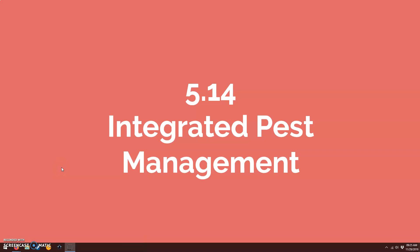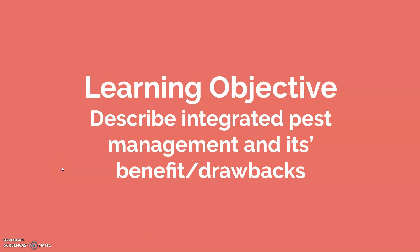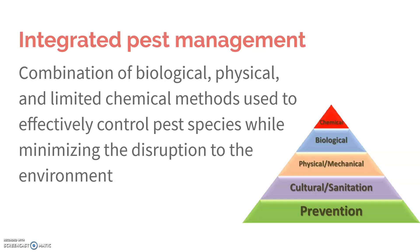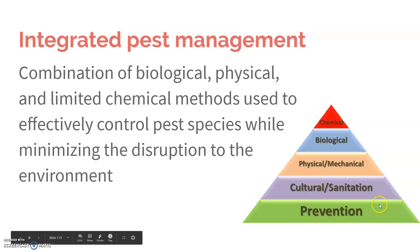Section 5.14 is on integrated pest management — you want to be able to describe it as well as its benefits and drawbacks. Basically, integrated pest management boils down to using chemical pesticides as a last resort, finding other alternatives or using them in conjunction with other alternatives to minimize how much you need to use them, thereby minimizing the disruption to the environment. First we have prevention methods, then cultural and physical, biological, and as a last resort, chemical.